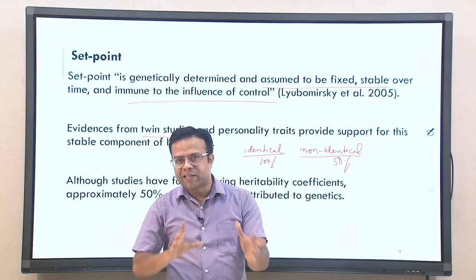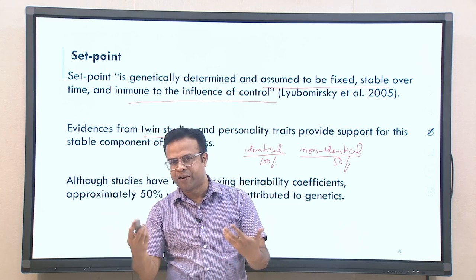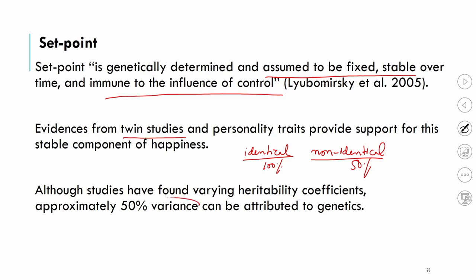Different studies show different percentages of genetic contribution. Most studies generally show a coefficient of approximately 50 percent variance explained by genetics, though some studies show slightly more and some slightly less. Genetic contribution is not the same for every aspect — for some traits it could be much more, for others less. For happiness specifically, approximately 50 percent contribution from genetics is a reasonable estimate.